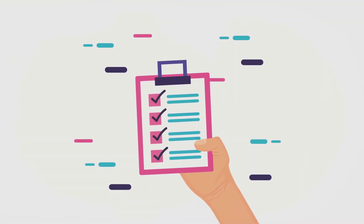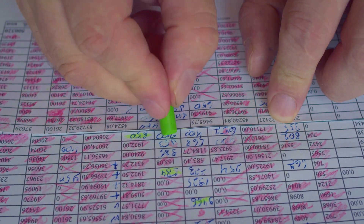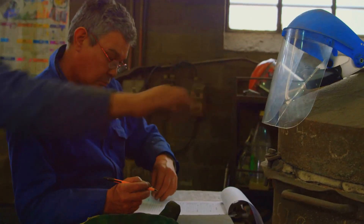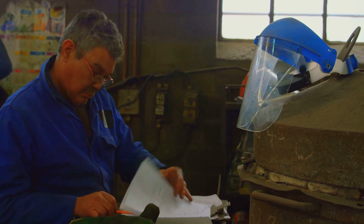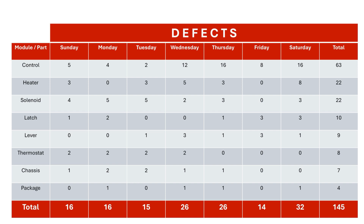The Checksheet: capturing meaningful data. Data is the backbone of quality improvement. The checksheet is a deceptively simple yet incredibly powerful tool for collecting and organizing data. It helps you gather precise, actionable information, complete with metadata like the who, when, and where, ensuring that your decisions are based on facts rather than assumptions. In our toaster example, we identified eight types of defects during the final testing phase. Using a checksheet, we recorded data over a week and discovered a total of 145 defects, an average of 20 to 21 per day. With this data in hand, we're equipped to analyze and prioritize the issues. Remember, a checksheet isn't just about counting — it's about understanding patterns and trends in your process.